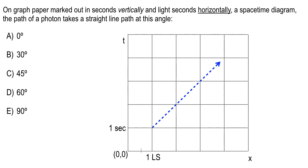On graph paper marked in seconds vertically and light seconds horizontally, let's think geometrically. The correct answer: 96% of you got it — it's the 45-degree line. That's the photon path. Everything inside that is slower than the speed of light: cars, Ferraris, trains, the bullet train in Japan. Only photons actually are on that dashed line.